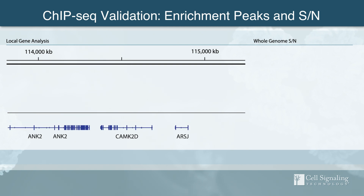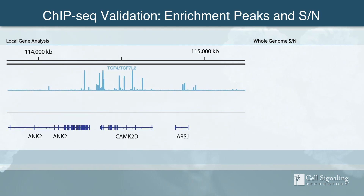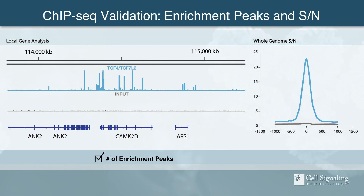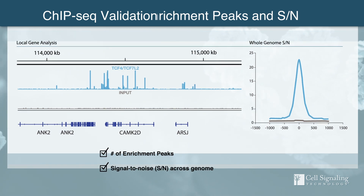Antibody sensitivity in ChIP-seq is evaluated by comparing peaks for enriched loci to background signal to measure signal-to-noise ratio. To be recommended for ChIP-seq, an antibody must provide an acceptable number of enrichment peaks and a threshold signal-to-noise ratio across the genome.